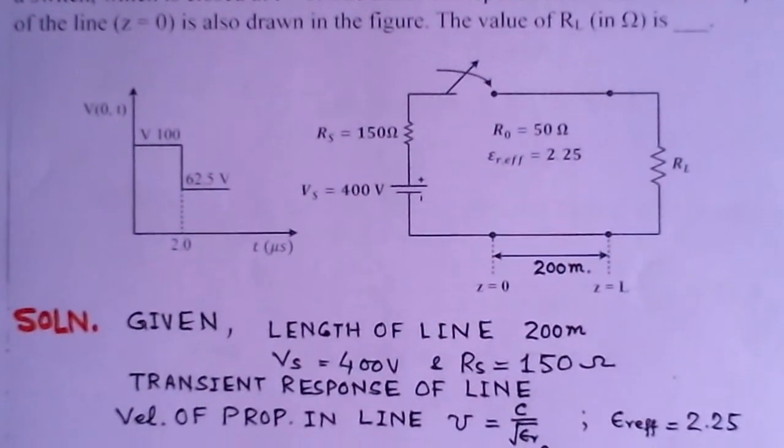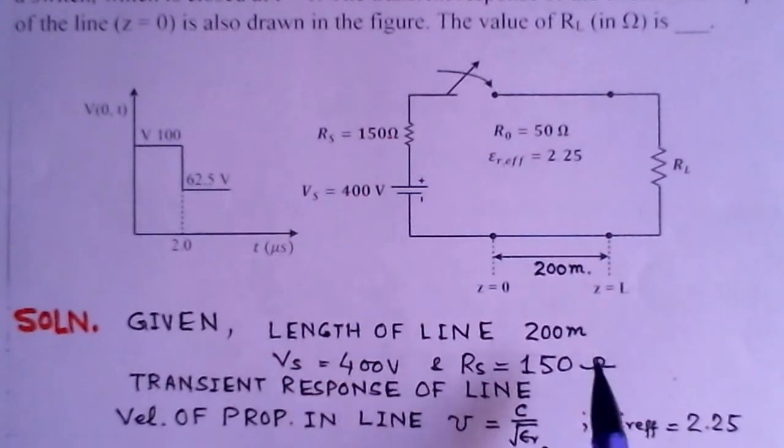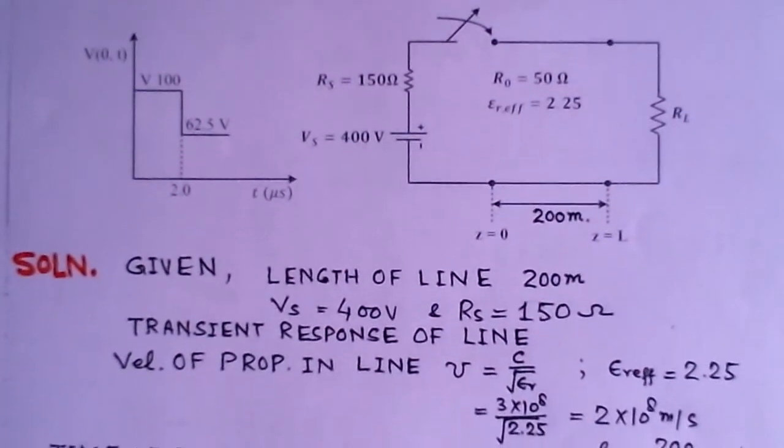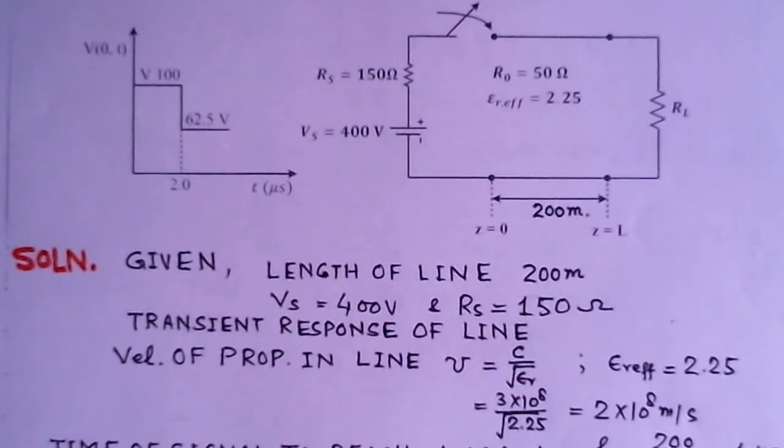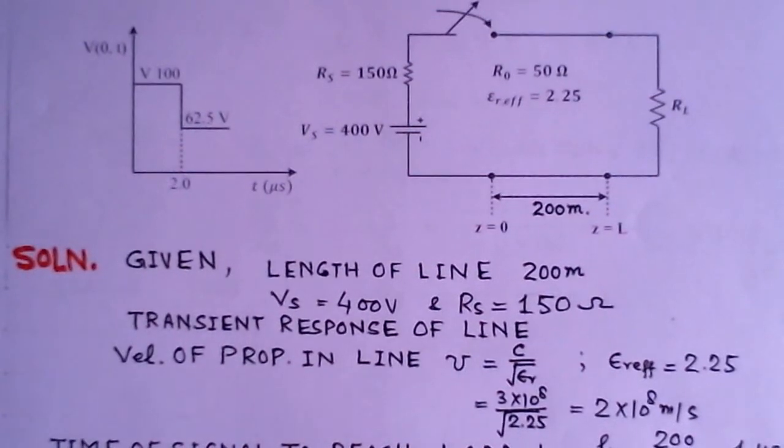If we look into this problem now, what we find here is the length of the line is 200 meters, source voltage is 400 volts, source resistance is 150 ohms, and transient response of the line is given. Now we wish to find the velocity of propagation in the line.